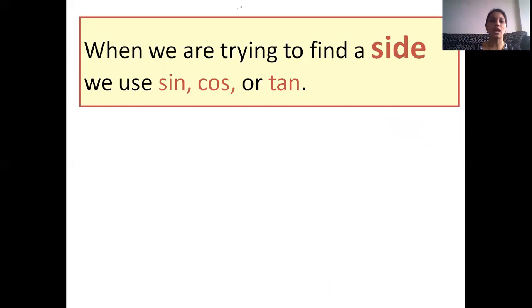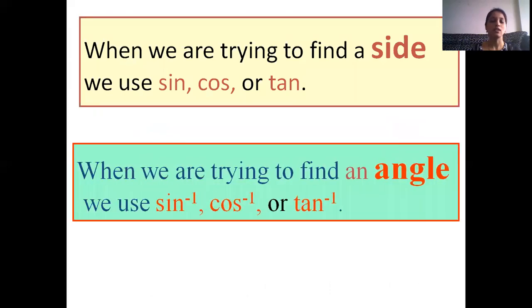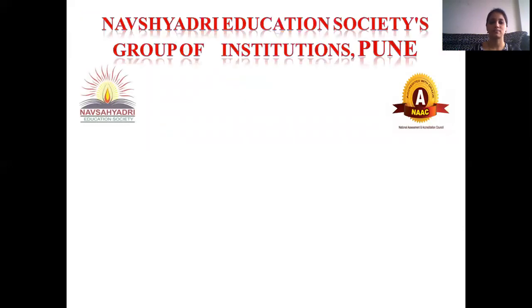To conclude: when we are trying to find a side, we use sine, cos, or tan. When we are trying to find an angle, we use sine inverse, cos inverse, or tan inverse. Thank you.